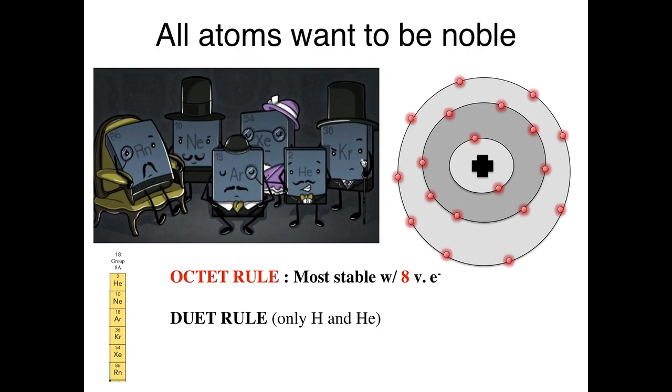A little side note to that is that there's also a duet rule. And this duet rule applies to hydrogen and helium, which are the first two elements because they only have one and two electrons respectively.